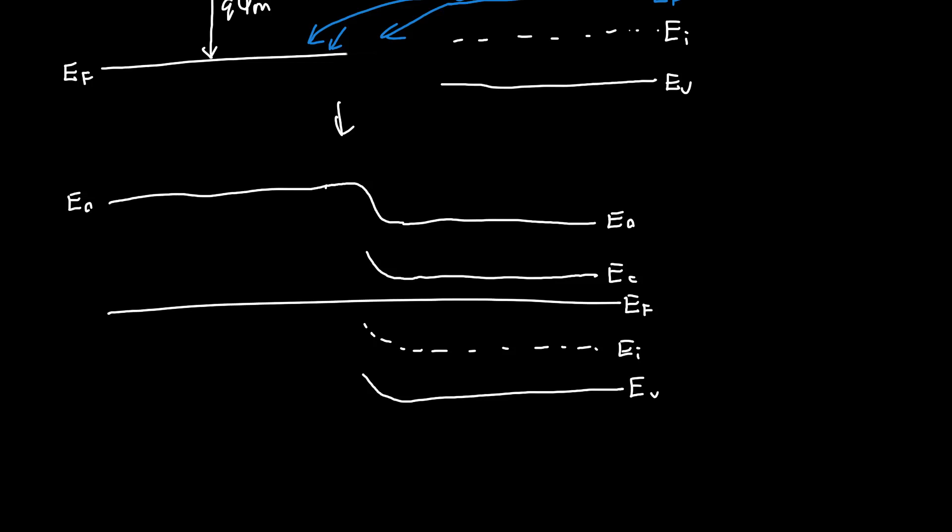So EF is now constant throughout the structure. This is still an n-type semiconductor, and now a bunch of electrons have diffused into the metal, so the metal has more electrons than the semiconductor. Similarly, the semiconductor now has a bunch of positively charged ions, so a bunch of dopants that are now ionized very near the surface.